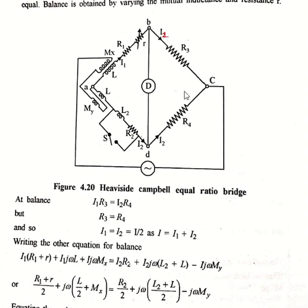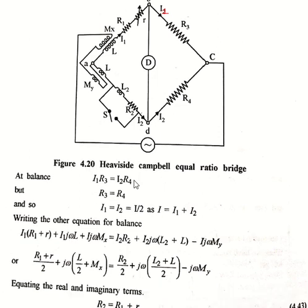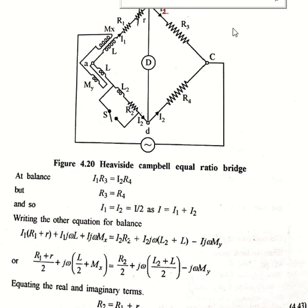At balance condition we have i1·R3 equal to i2·R4. Since R3 equals R4, we have i1 equals i2, which are each half of the total current in the line. So the total current i equals i1 plus i2. Like in the Heavyside bridge, we take the voltage drop across arm AB equal to arm AD, which gives a voltage equation.